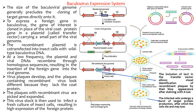The recombinant plasmid is co-transfected into the insect cell with the wild-type baculovirus DNA. At low frequency, the plasmid and viral DNA recombine through homologous sequences, resulting in the insertion of the foreign gene. This transfer vector consists of a lacZ gene and a target gene — the gene of interest — whereas the baculovirus genome consists of a restriction enzyme site and a polyhedrin gene site.